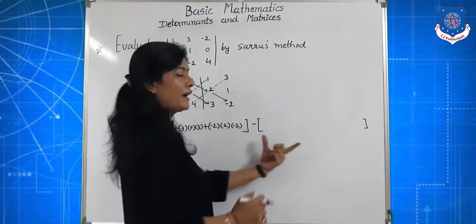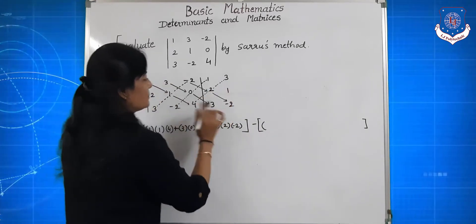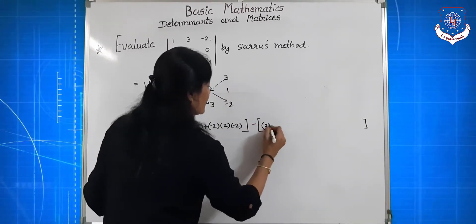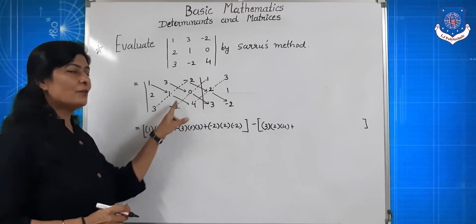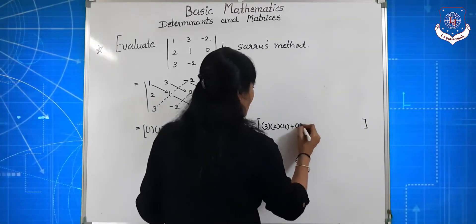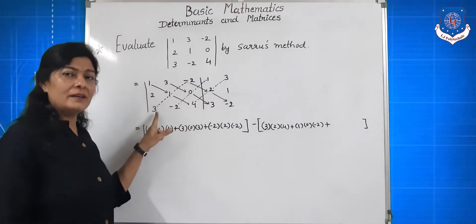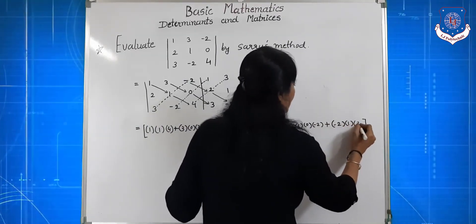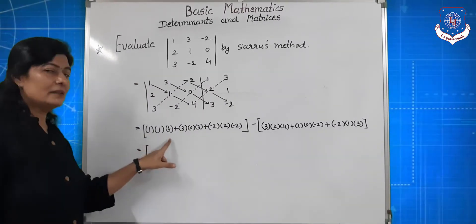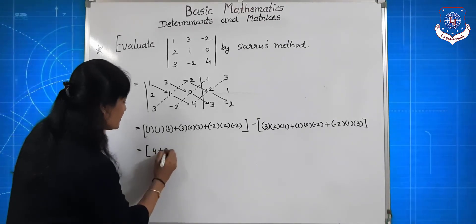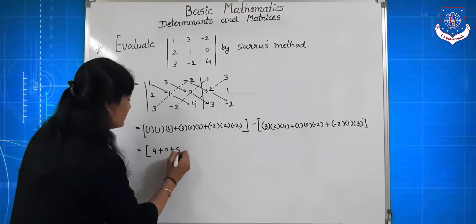Jo second bracket hai, usme right-to-left diagonals ka multiplication: 3, 2, 4 plus 1, 0, minus 2 plus minus 2, 1, 3. Calculation: 1 into 1 into 4 = 4, plus 3 into 0 into 3 = 0, plus minus 2 into 2 into minus 2 = 4. Minus bracket: 3 into 2 into 4 = 24, plus 1 into 0 into minus 2 = 0, plus minus 2 into 1 into 3 = minus 6.